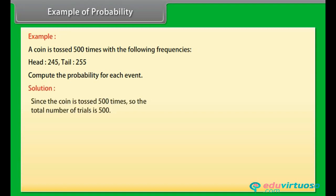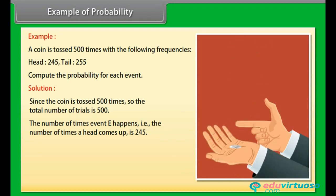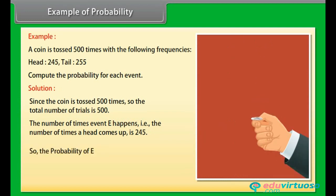Solution: Since the coin is tossed 500 times, so the total number of trials is 500. The number of times event E happens, that is the number of times a head comes up, is 245. So the probability of E is equal to number of heads upon total number of trials. That is, P(E) equals 245 upon 500.